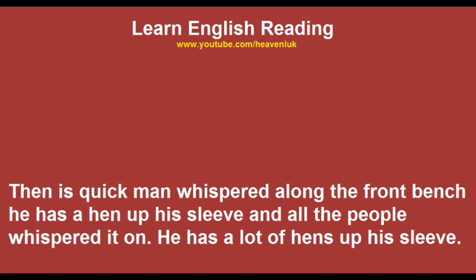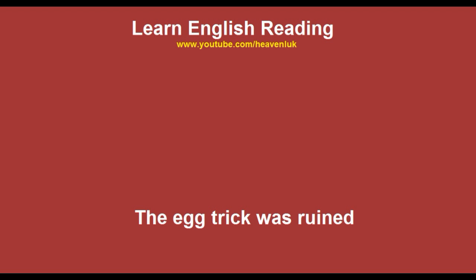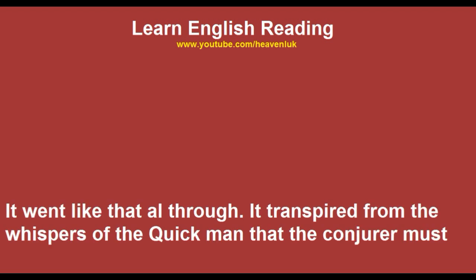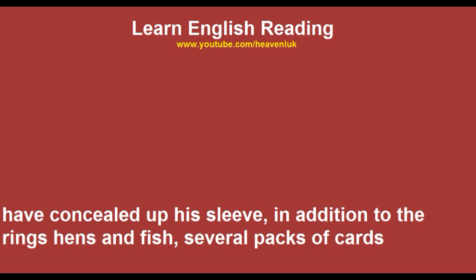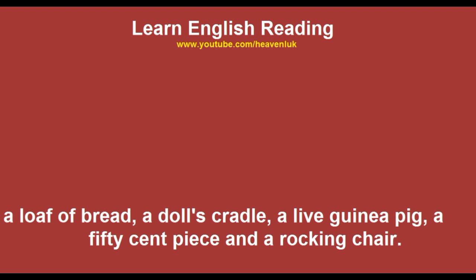Then the quick man whispered along the front bench, 'He has a hand up his sleeve,' and all the people whispered it on. 'He has a lot of hands up his sleeve.' The egg trick was ruined. It went on like that all through. It transpired from the whispers of the quick man that the conjurer must have concealed up his sleeve, in addition to the rings, hands, and fish: several packs of cards, a lot of bread, a doll's cradle, a live guinea pig, a 50-cent piece, and a rocking chair.